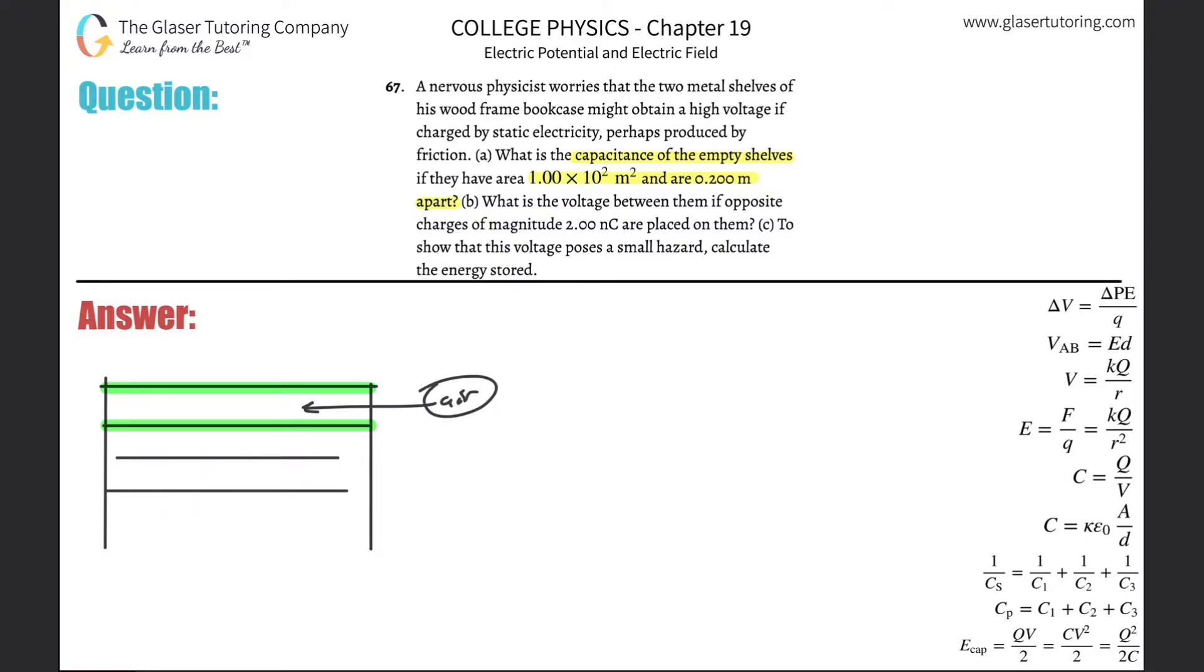The material between them is air, so you got to remember that the dielectric constant for air is about one. They tell us that the total area of these shelves - each shelf individually which is the area we're going to use - and the distance that they are apart is 0.2 meters.